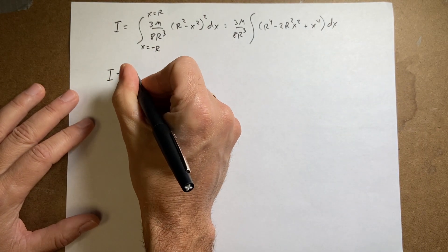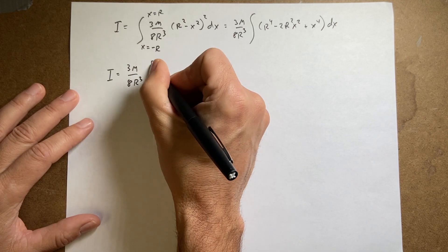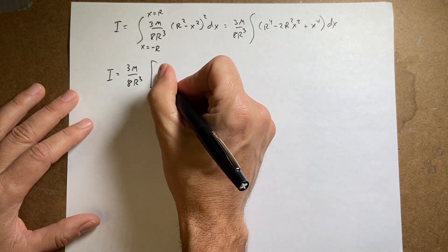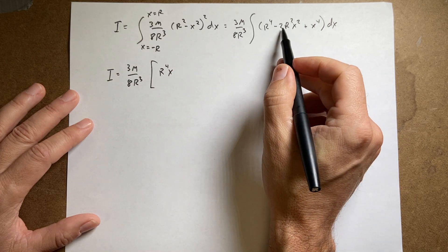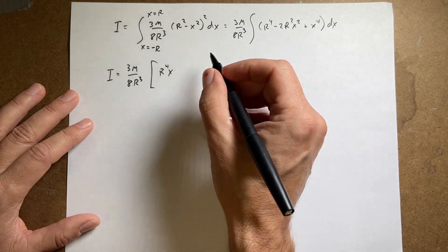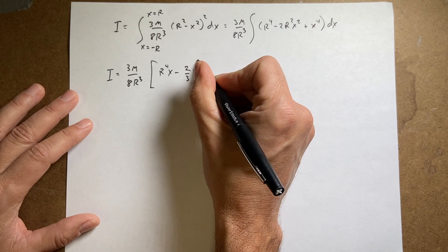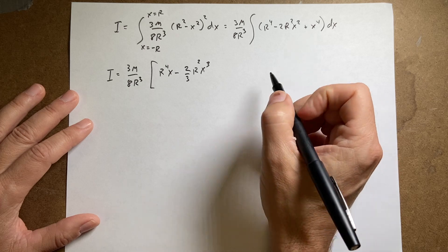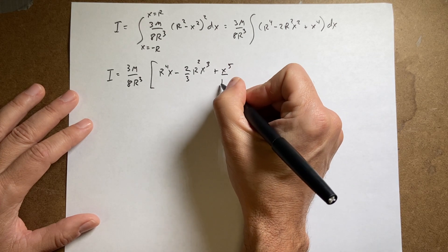So I = 3m over 8r³ times the integral of (r⁴ − 2r²x² + x⁴) dx. Integrating: r⁴ integrates to r⁴x (it's a constant), −2r²x² integrates to −(2/3)r²x³, and x⁴ integrates to x⁵/5. Evaluating from x = −r to x = r.